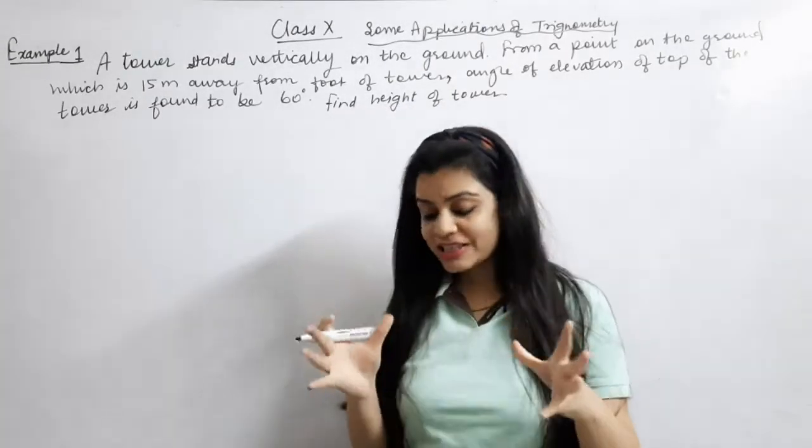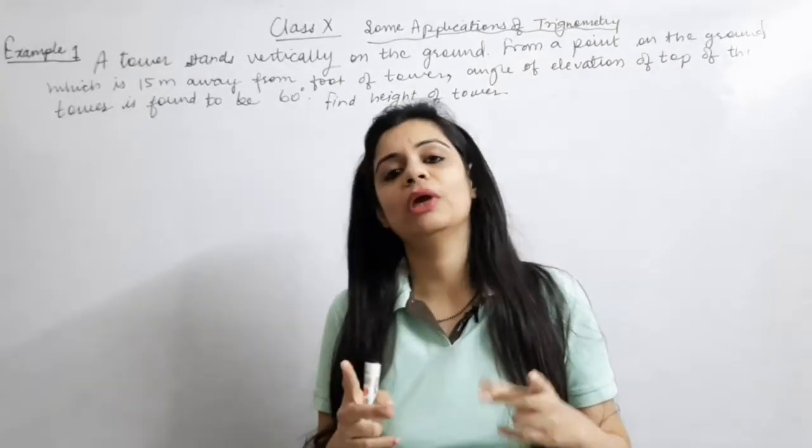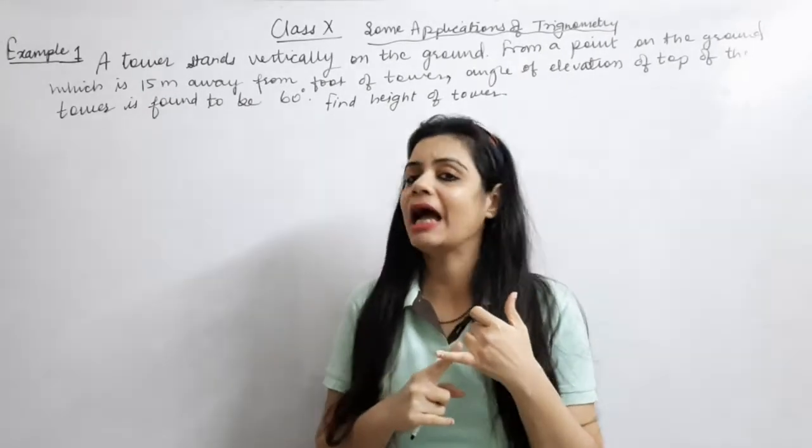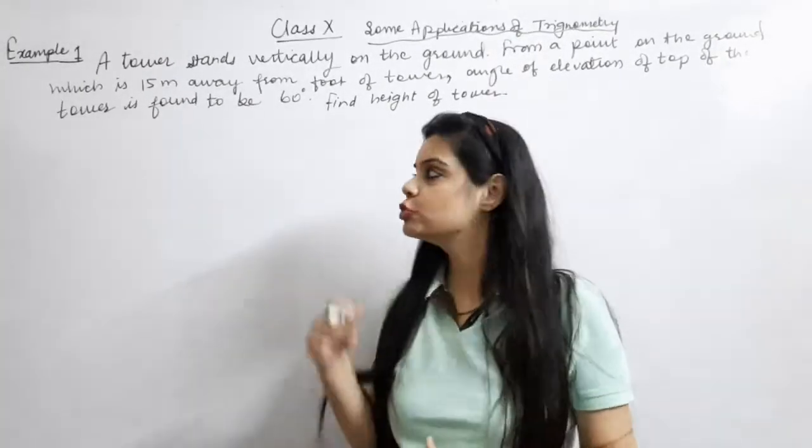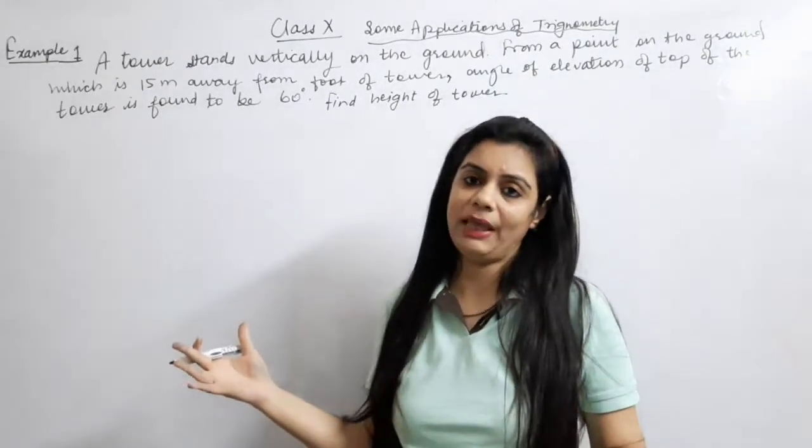Let's understand. Look, there are two types of angles in this whole chapter: Angle of Elevation and Angle of Depression. What happens first? Then we will move on to example number one.